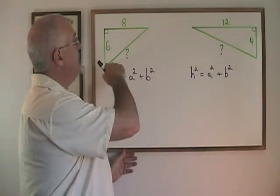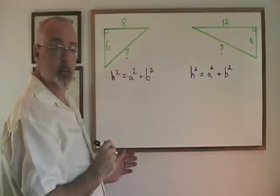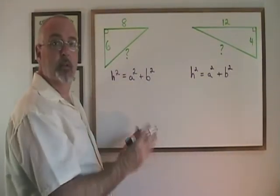h stands for hypotenuse, which is the side opposite the 90 degree angle, and a and b stand for the other two sides, and they are interchangeable.